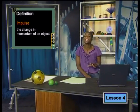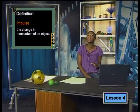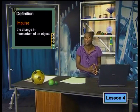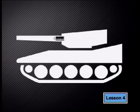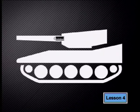The impulse experienced by the projectile and the gun must be equal in magnitude. Can you explain why? According to Newton's third law, if the gun exerts a force on the projectile, then the projectile must exert a force of equal magnitude but in the opposite direction on the gun. Also, the gun and the projectile are in contact with each other for the same amount of time while the force acts on both of them.